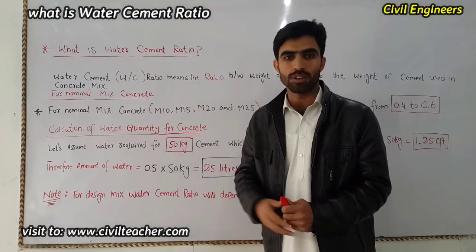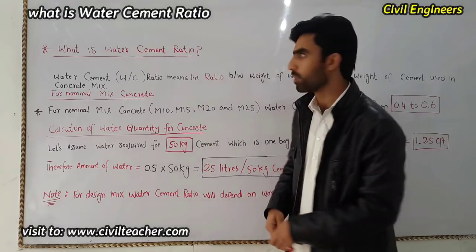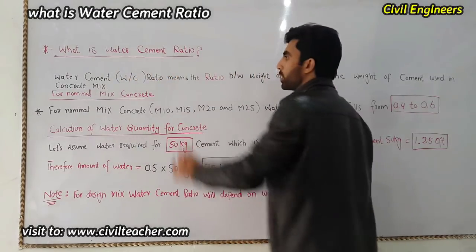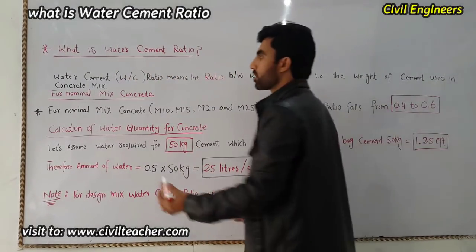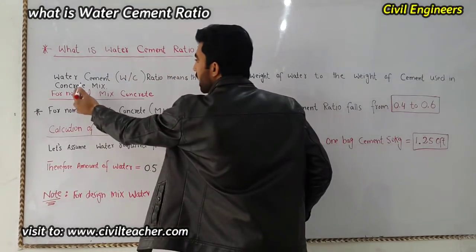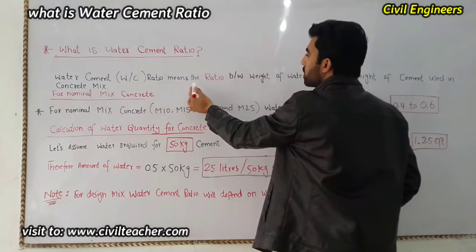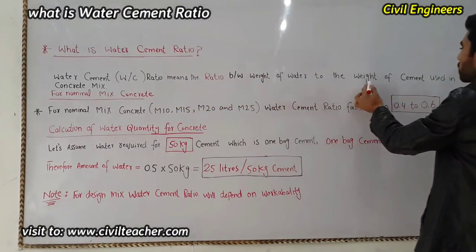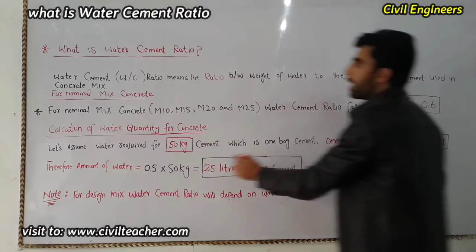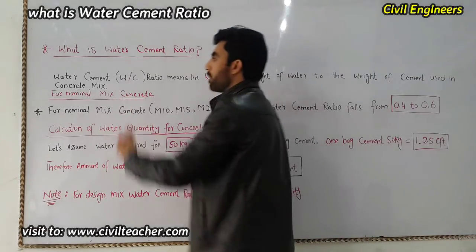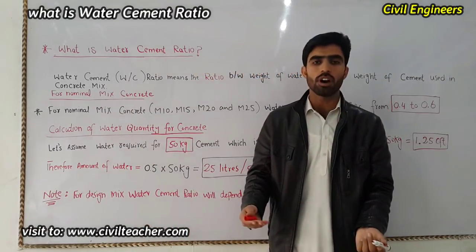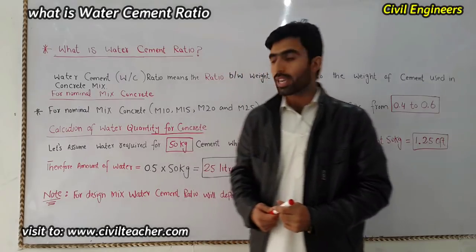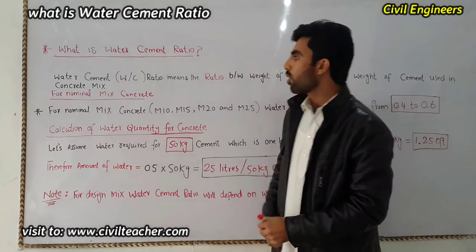Let's start. What is water-cement ratio? Simply, you can define water-cement ratio as the ratio between the weight of water to the weight of cement used in a concrete mix. That is the simple definition of water-cement ratio.